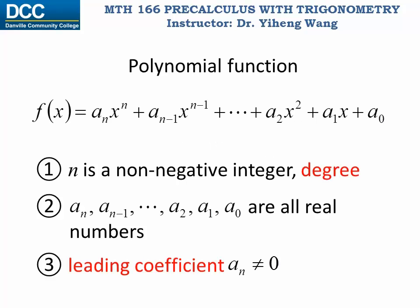First let's review the definition of a polynomial function. A polynomial function is the sum of terms of x with descending power. The degree of the polynomial function is classified by the highest power of x, n, which is a non-negative integer. The coefficients a_n, a_{n-1}, etc., are all real numbers — they can be any real number except for a_n, the leading coefficient, which cannot be zero.